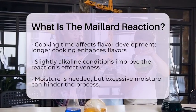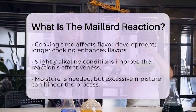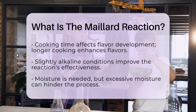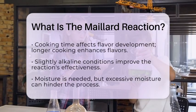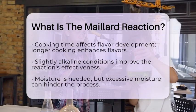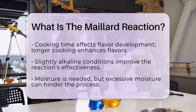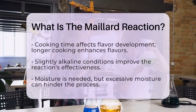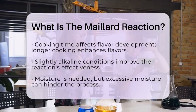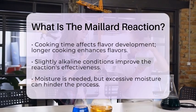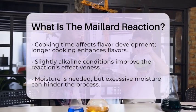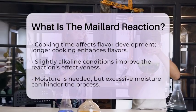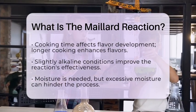The pH level can affect the reaction too — slightly alkaline conditions help the amino groups react more effectively. Lastly, moisture is necessary, but too much can slow down the process. In the context of bread baking, the Maillard reaction contributes to the crust's browning and flavor development.